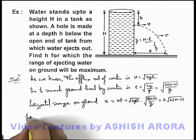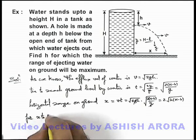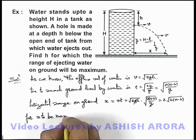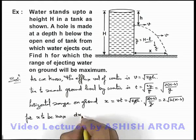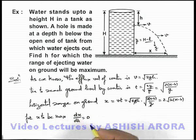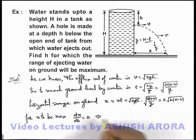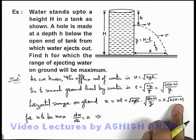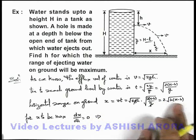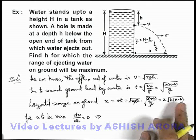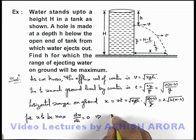Now we can simply state for x to be maximum, we need to use dx by dh should be equal to zero. And this implies if we differentiate the expression twice of root h into H minus h, then it can be given as 1 by twice of root of h.